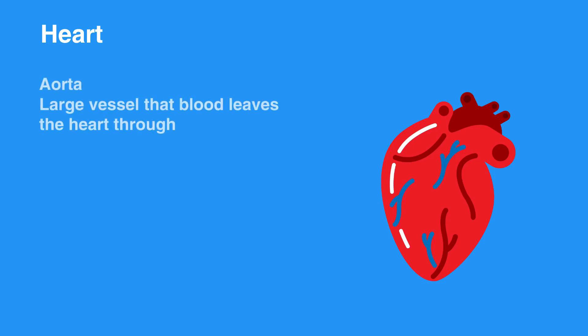Valves between each chamber prevent reverse blood flow. Blood leaves the heart through a large vessel called the aorta. The two atria contract simultaneously, as do the ventricles, making the contractions of the heart go from top to bottom.